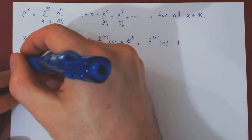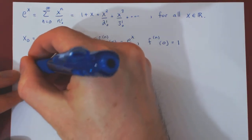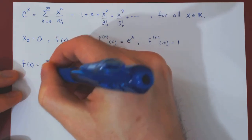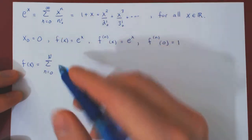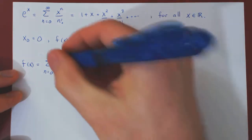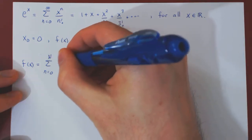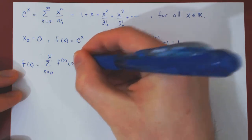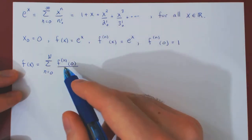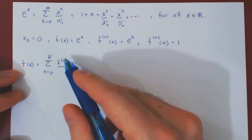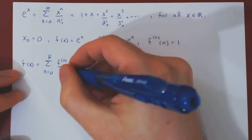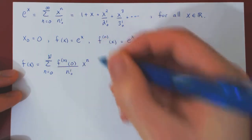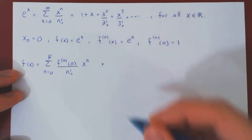Taylor's theorem then states that f of x will be equal to the sum from 0 to uppercase N, where uppercase N is some positive integer. The terms are the higher derivatives of the function at 0 over n factorial, times x to the n, plus the remainder term.